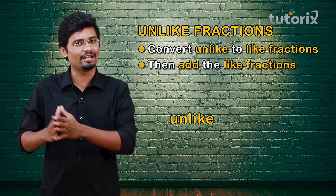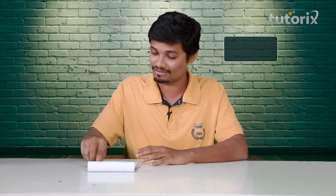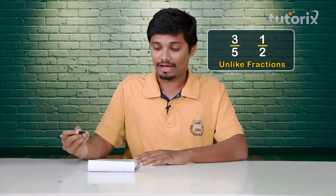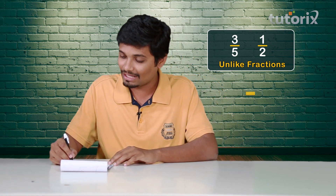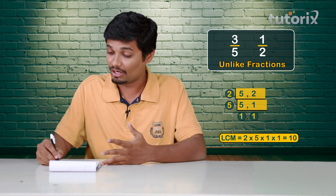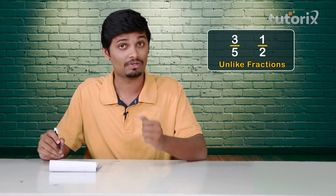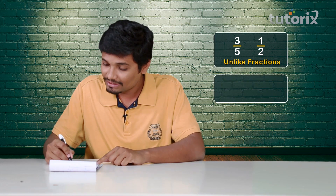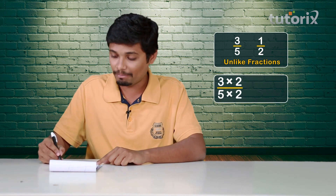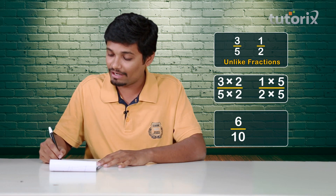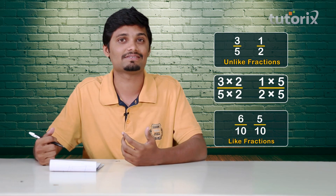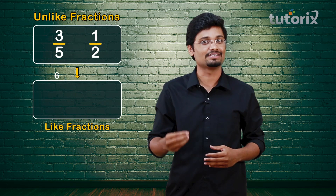But do you remember how to convert unlike fractions to like fractions? Yes, I do remember how to convert them. For example, if I have unlike fractions 3 by 5 and 1 by 2, I convert these unlike fractions to like fractions by taking the LCM of both the denominators — LCM of 5 and 2 is 10. This LCM will be the denominator of both the fractions. So I multiply the numerator and denominator of 3 by 5 by 2, and of 1 by 2 by 5. The fractions after multiplication become 6 by 10 and 5 by 10, so clearly they are like fractions.